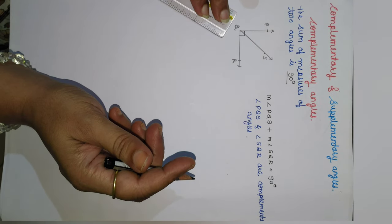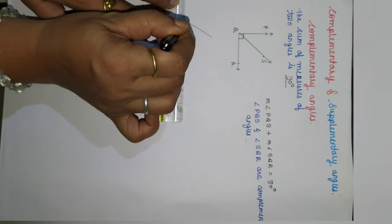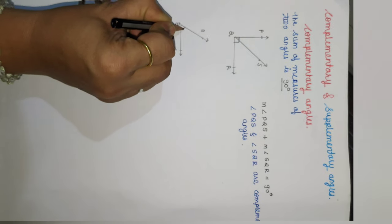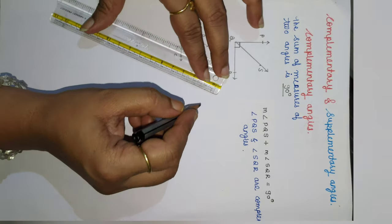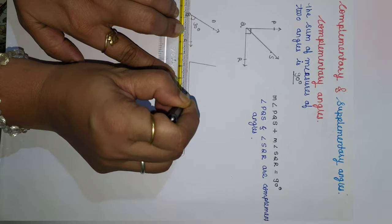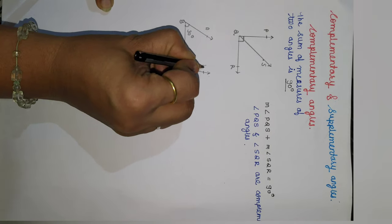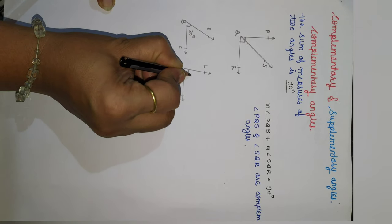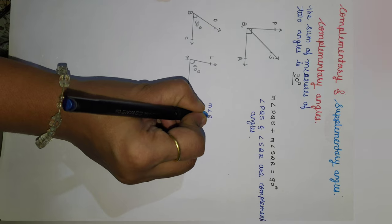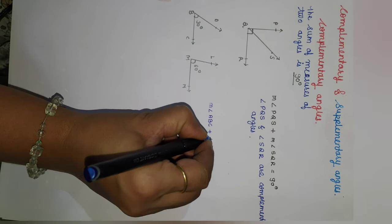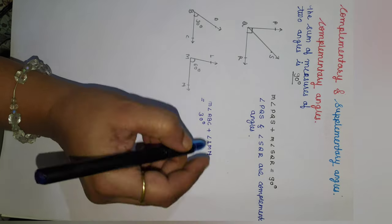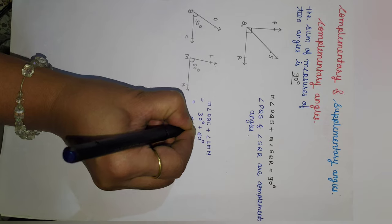Let us learn about two different angles. Here, I will draw two different angles. The first angle is angle ABC — suppose its measurement is 30 degrees. The second angle is angle LMN — suppose its measurement is 60 degrees. If we add the measure of these two angles, that is measure of angle ABC plus measure of angle LMN, we get 30 degrees plus 60 degrees, which is equal to 90 degrees.